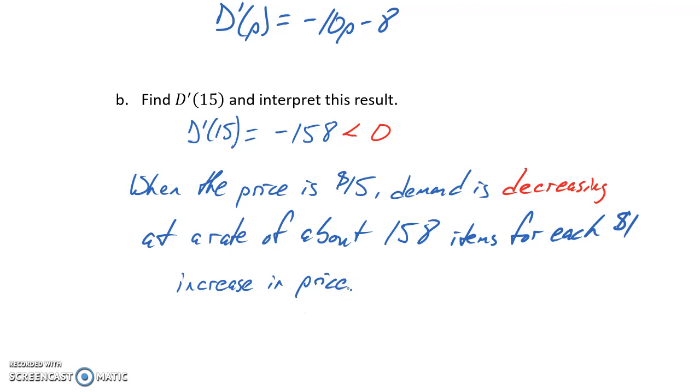We can say that demand is decreasing at a rate of about 158 items for each $1 increase in price. So the same idea as before, if our current price is $15, if we increase that by $1, then our demand will decrease by approximately 158 units, since in this case that marginal result came up as a negative value.